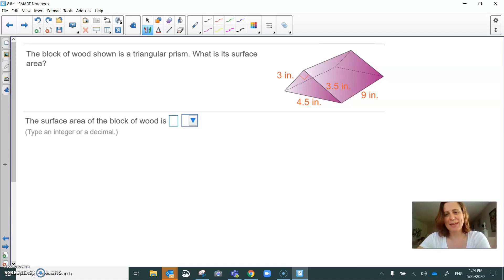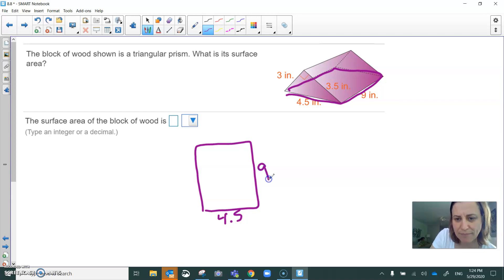I'm gonna make this into a net and the first part of my net that I'm going to create is, if this was a block of wood sitting on the table, it's this rectangular portion right here. That's four and a half by nine.